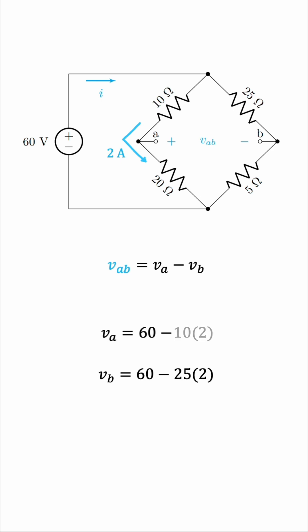So, VA will be 60 minus 20, which is 40 volts, and VB will be 60 minus 50, which is 10 volts. So, VAB is the difference between those two voltages, and that will be 40 minus 10, which is 30 volts. So, this is the Thevenin voltage, since it's the open circuit voltage between terminals A and B. So, that's the Thevenin voltage done.